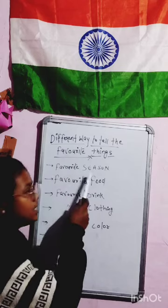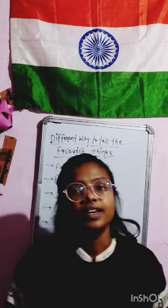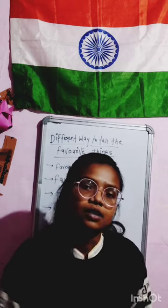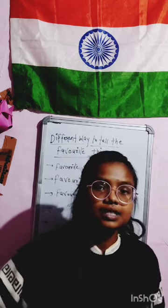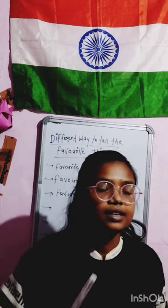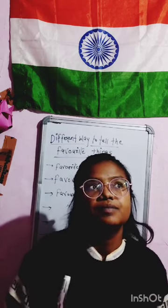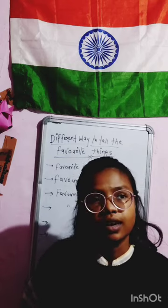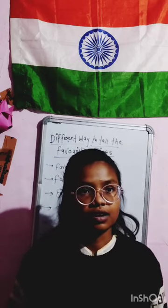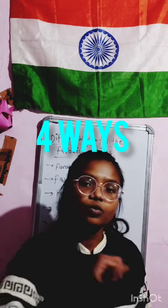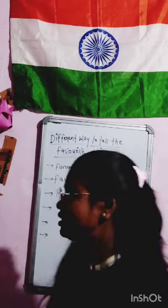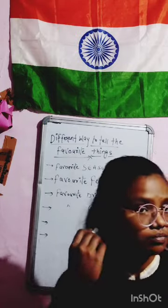So here I have brought the example of favorite season. For example, I would say my favorite season is winter. I can also say I like the winter season, my most favorite season is winter, or I really like the winter season. So we learned four ways to say a favorite thing. Let's move on to the second one: favorite food.